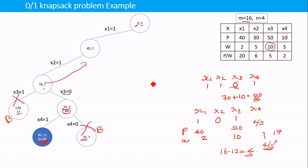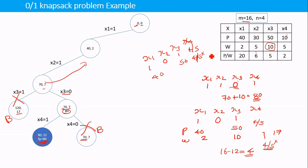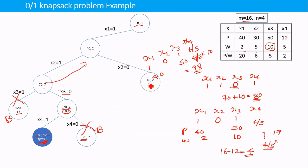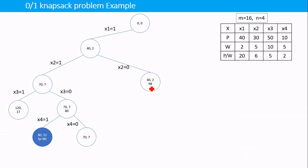Taking 4/5 of x4 with x1=1, x2=0, x3=1, x4=4/5: the total profit is 40+50+(4/5×10)=98. Since 98 is greater than our current best profit of 80, we explore this branch further. The bounding function checks whether following this subtree can yield a better profit than what we already have; if not, we skip it. This is how the backtracking algorithm works.